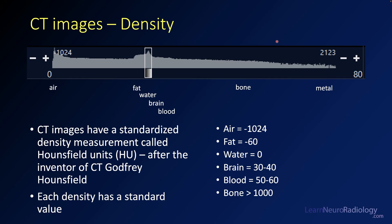CT images are standardized to look at density or X-ray absorption, measured in Hounsfield units — named after the inventor of the CT, Dr. Hounsfield. Each density has a standard value: water is very close to zero, bone is over 1,000, and air is minus 1,000 or minus 1,024. Looking at a histogram of all the voxels in a CT study, you can see air far out at minus 1,000, while fat, water, brain, and blood are tightly packed in the middle region. Bone and metal are far out toward 1,000 or more.